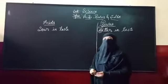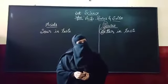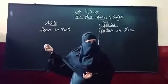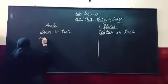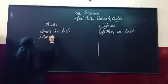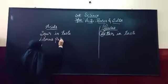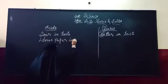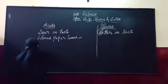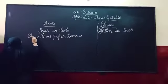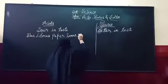That litmus paper, what happens? Once we dip in the acidic substance, it turns into red. Litmus paper turns into red. In blue litmus, this one, blue litmus paper turns into red.